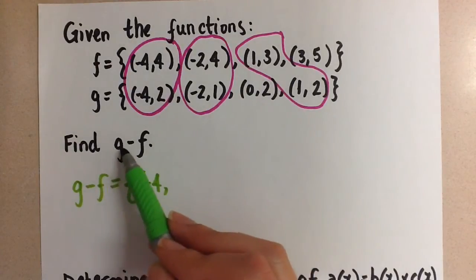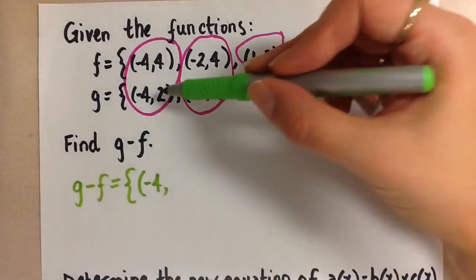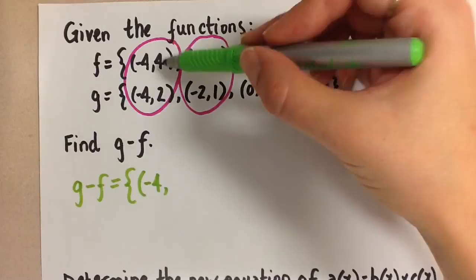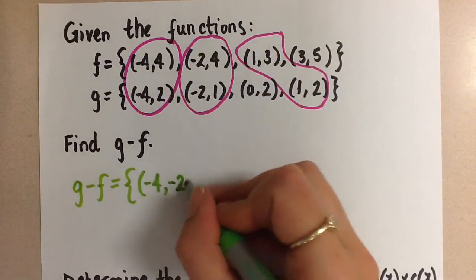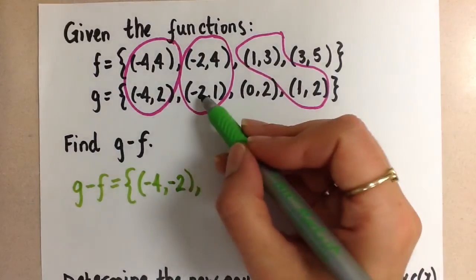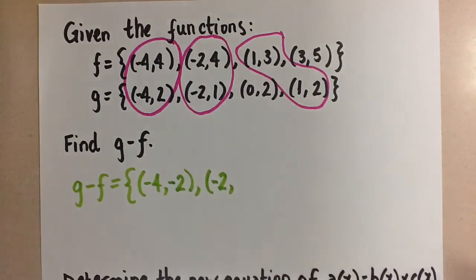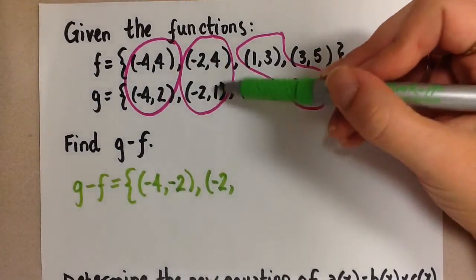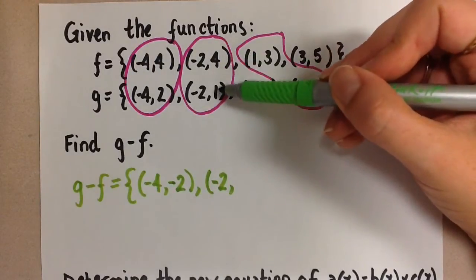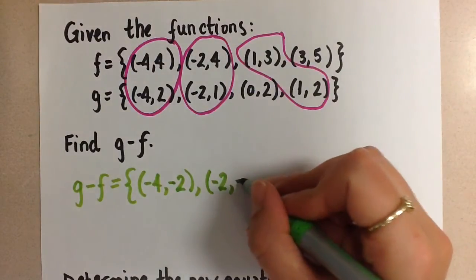So this tells us to do g minus f. We're going to do 2 minus 4, which gives us -2. The next point is going to be -2 for the x-coordinate, because that stays the same. And then g minus f is 1 minus 4, which is -3.